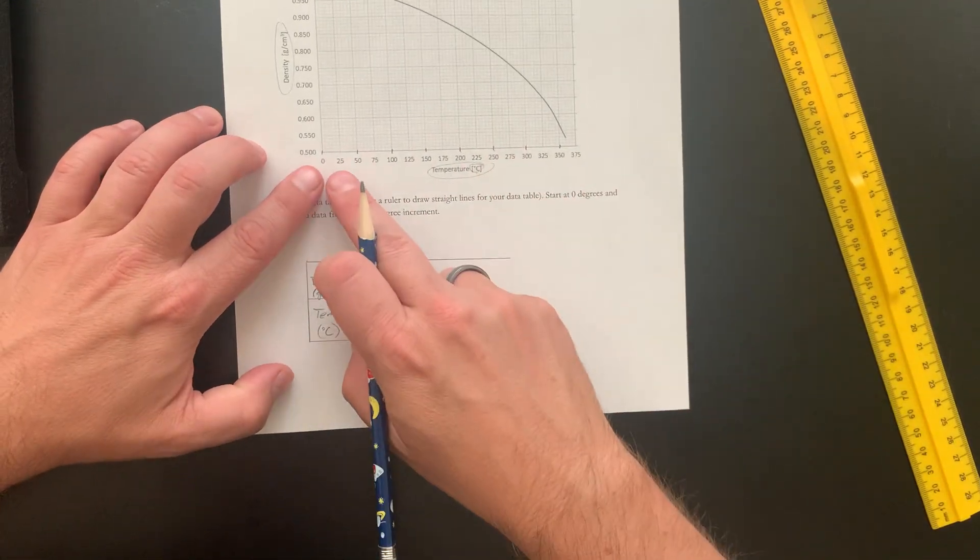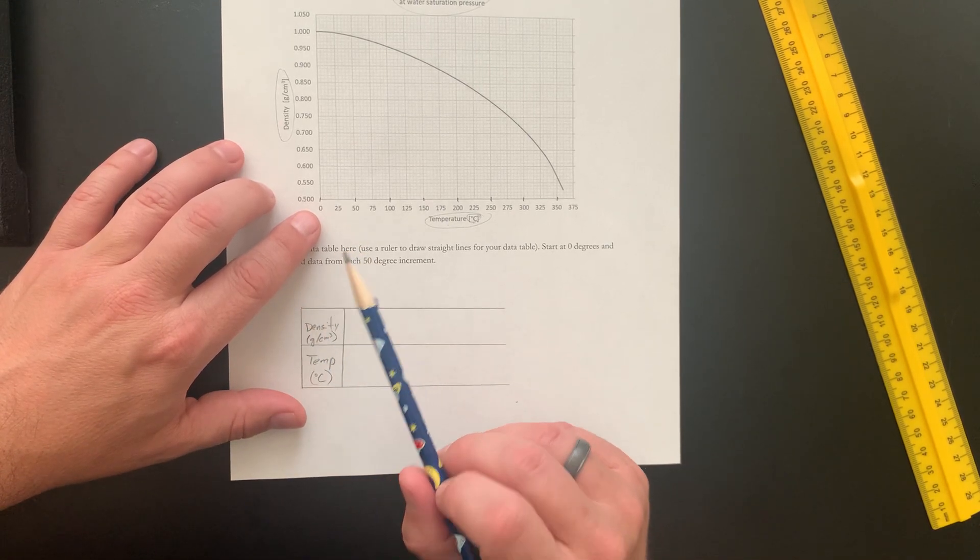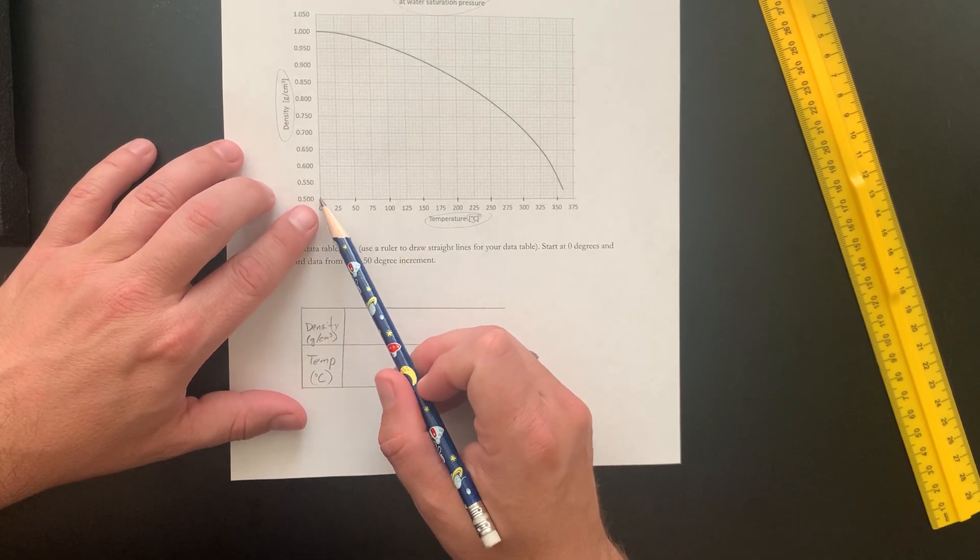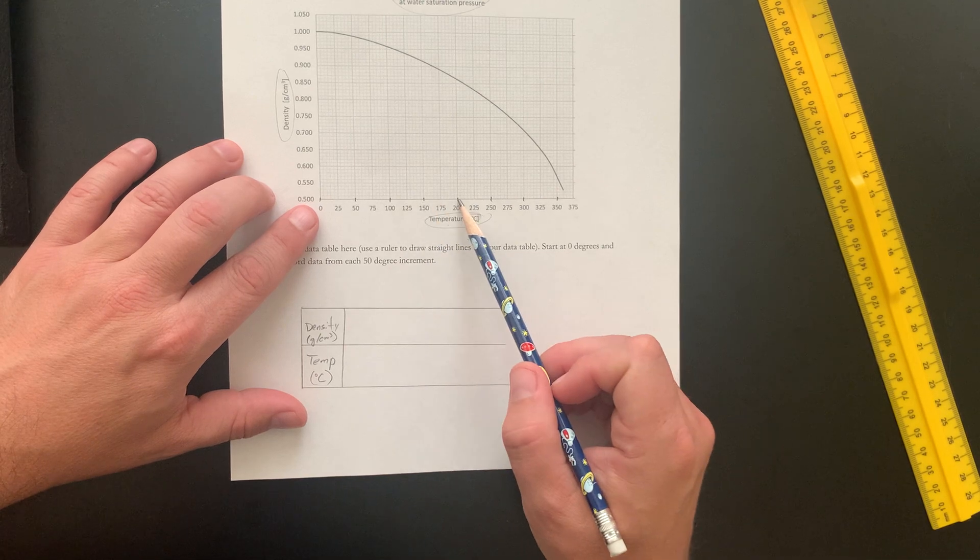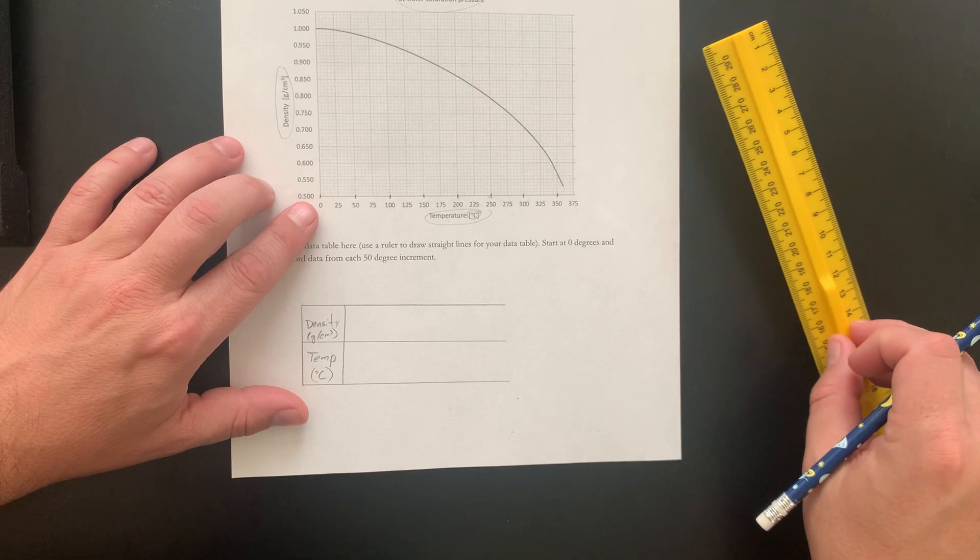Now how many points of data am I going to have to collect? Well, I said every 50 degrees starting at zero. So one, two, three, four, five, six, seven, eight. I'm going to have eight pieces of data that I'm collecting.